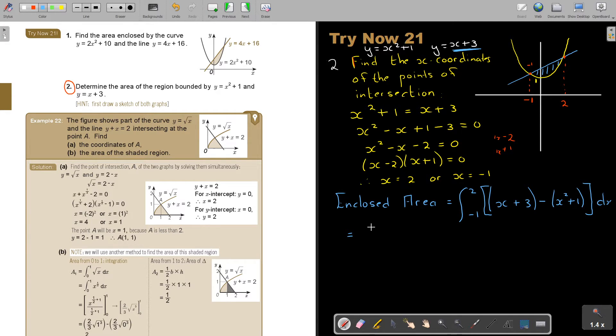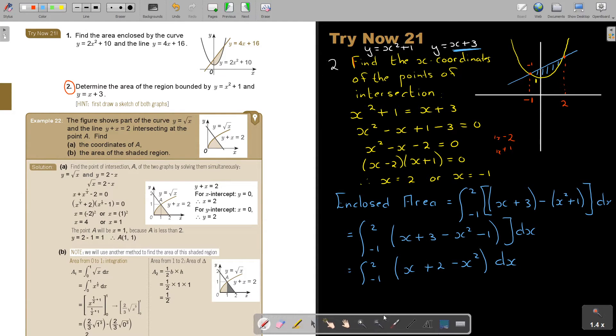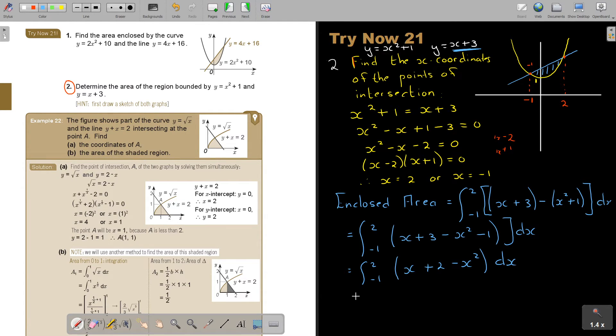I'm going to just do it here. So, I'm just going to simplify first. I can do it a little bit faster. X plus 3 minus X squared minus 1 DX. That was unnecessary. I think I could have skipped this step, but it's alright. So, it's going to be X plus 2 minus X squared, and it's going to be DX.